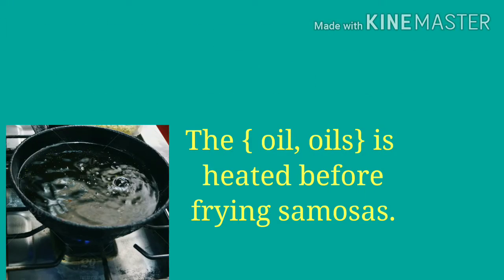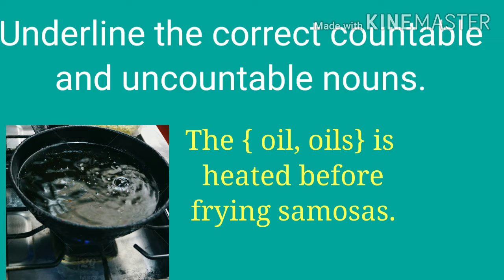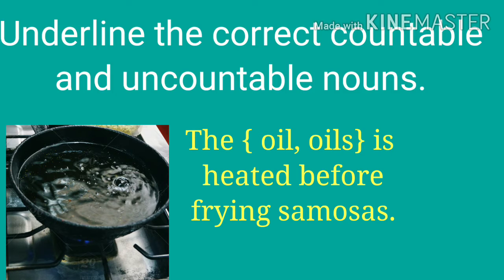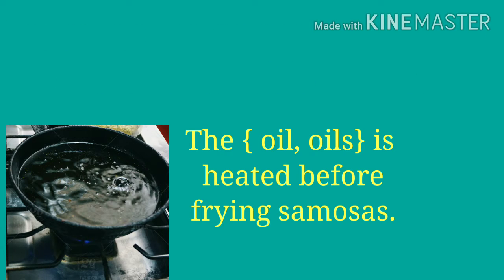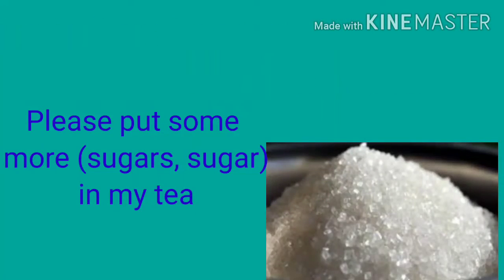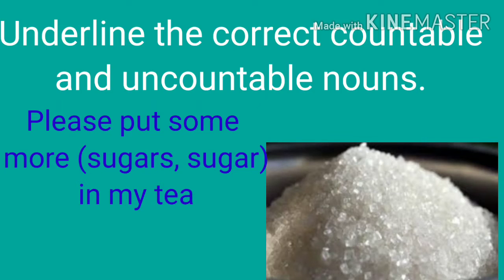Now identify the correct uncountable nouns in the given examples. 'The oil or oils is heated before frying samosas.' Here we are talking about the amount of oil, so oil is the uncountable noun. The correct answer is oil: 'The oil is heated before frying samosas.' Next: 'Please put some more sugars or sugar in my tea?'